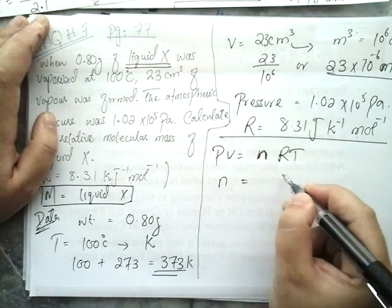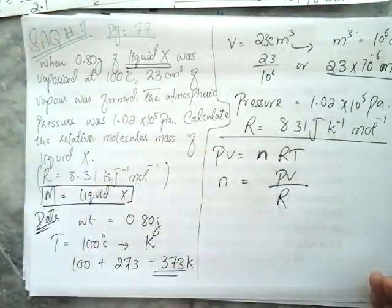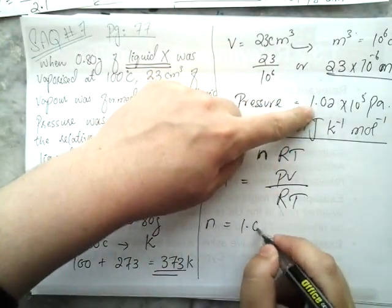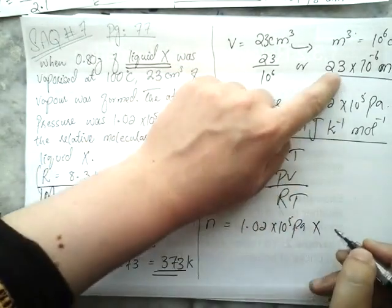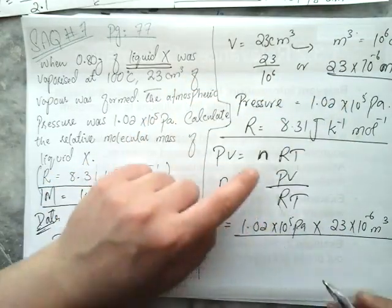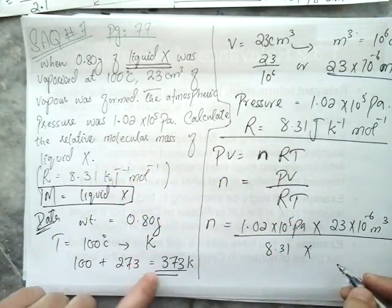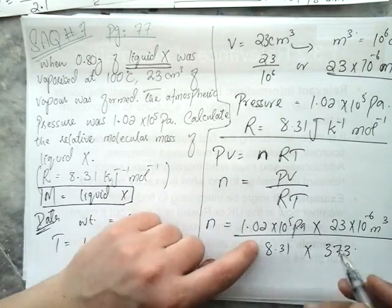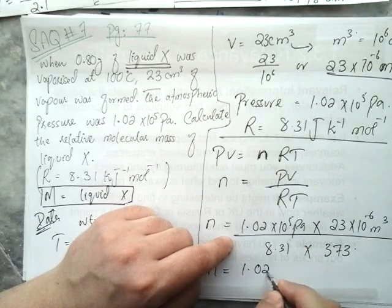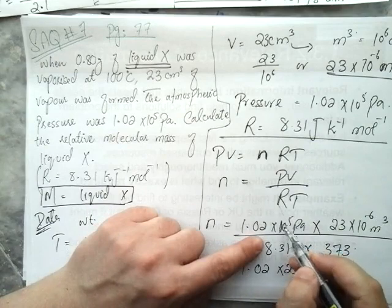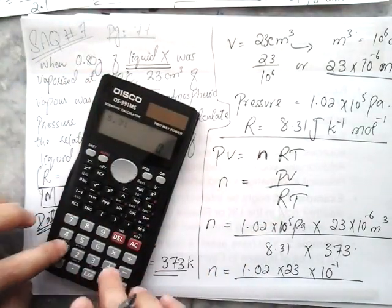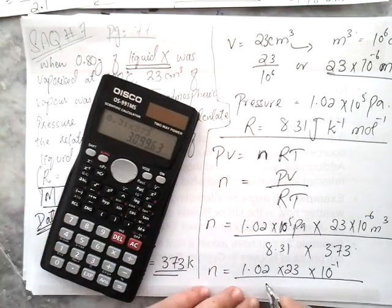Calculating n = PV / RT: numerator = 1.02 × 10⁵ × 23 × 10⁻⁶ = 1.02 × 23 × 10⁻¹ = 23.46 × 10⁻¹. Denominator = 8.31 × 373 = 3099.63. So n = 2.346 / 3099.63 ≈ 7.57 × 10⁻⁴ moles.